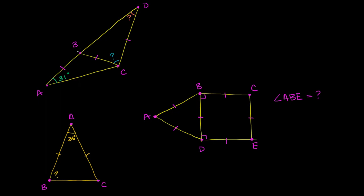We know that segment AB is equal to segment BC, which is equal to segment CD. We can see that triangle ABC is isosceles, and because it's isosceles, the two base angles are going to be congruent. This is one leg, this is the other leg right over there. So we know that this angle right over here is also 31 degrees.